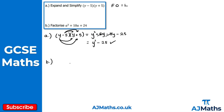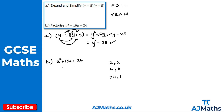For part b, factorize a squared plus 10a plus 24. Using TEAM, I need two numbers that multiply to get positive 24 and add to get positive 10. Options: 12 and 2 multiply to 24, but 12 plus 2 is 14, not 10. 4 and 6 multiply to 24, and 4 plus 6 is 10 — correct pair.